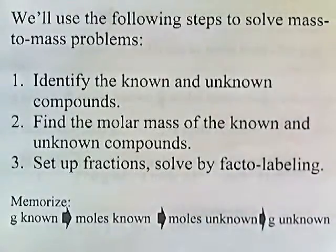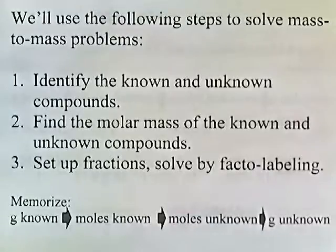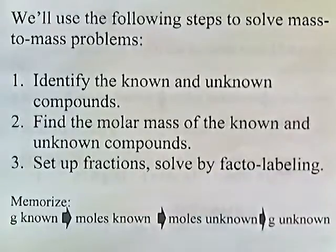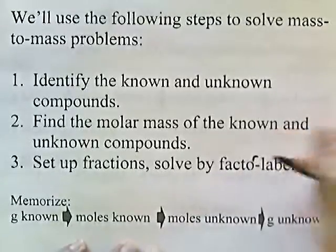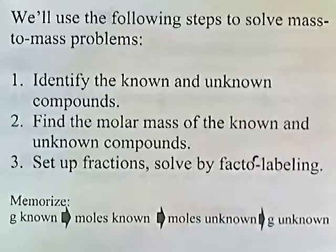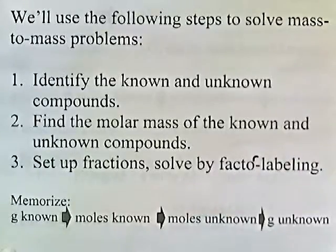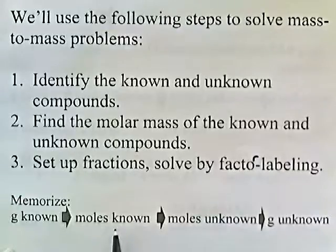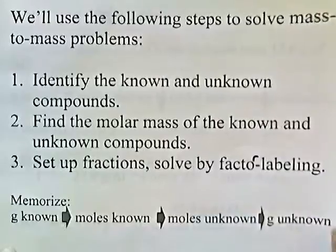We'll use the following steps to solve mass-to-mass problems: identify the known and the unknown compounds; find the molar mass of the known and unknown compounds; set up fractions; solve by factor labeling. The outline we're going to use is: grams of known to moles of known, moles of known to moles of unknown, moles of unknown to grams of unknown.